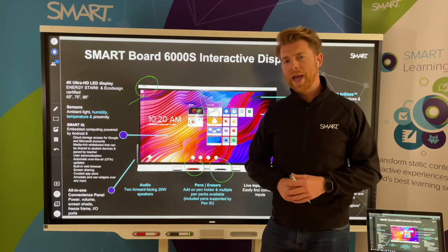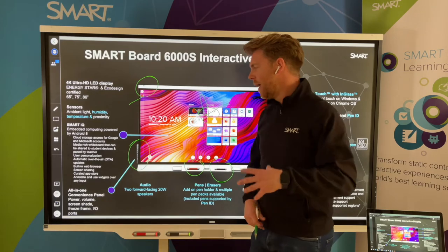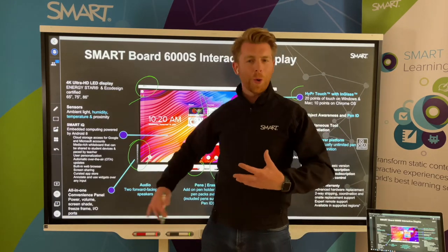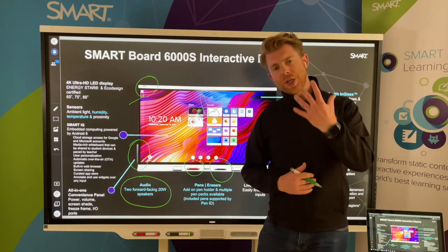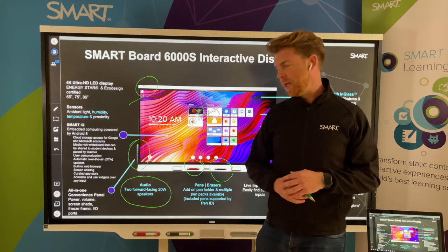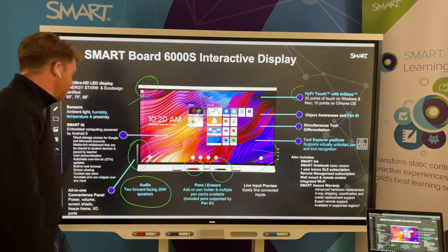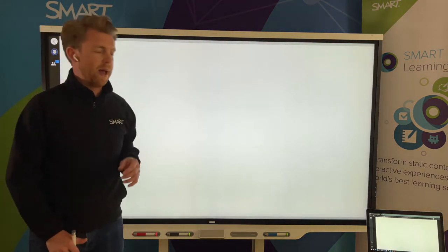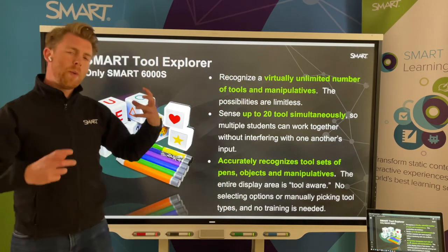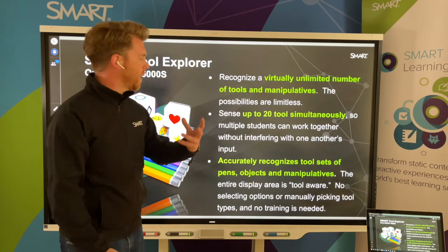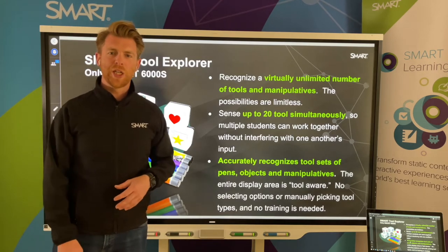The sensors built into the board at the top — ambient light, humidity, temperature, and proximity — help create a connected classroom by monitoring the ideal learning environment. Signing into your account gives access to your content, and the convenience panel at the side lets you plug in additional devices, pause, freeze, adjust volume, or turn it off. The audio consists of two front-facing 20-watt speakers. An absolutely fantastic board — looking at the Tool Explorer with those cubes and manipulatives that help support your teaching and learning.